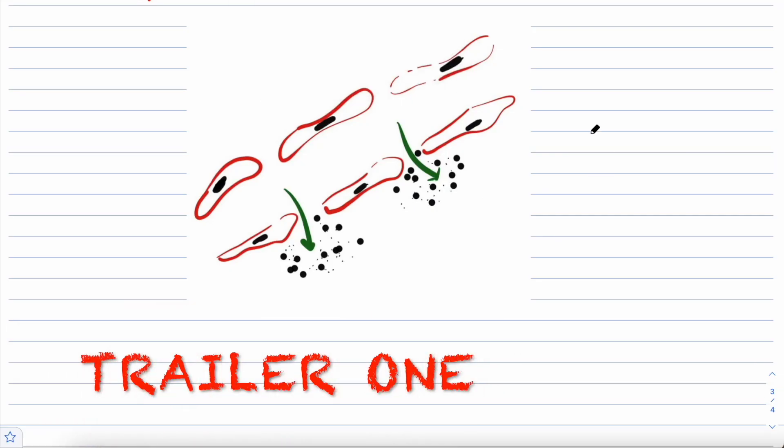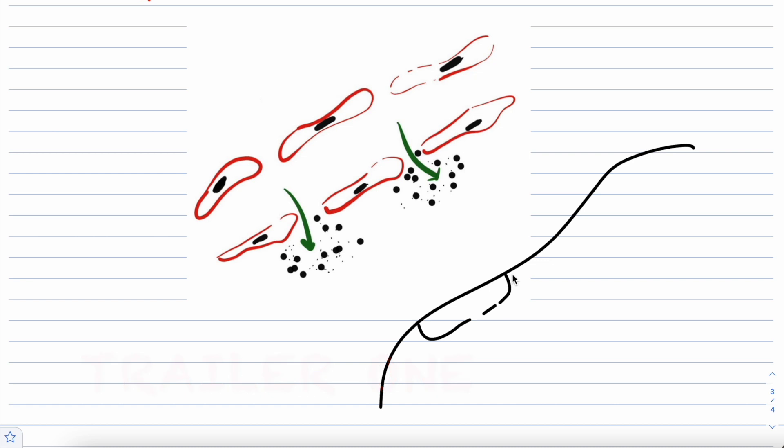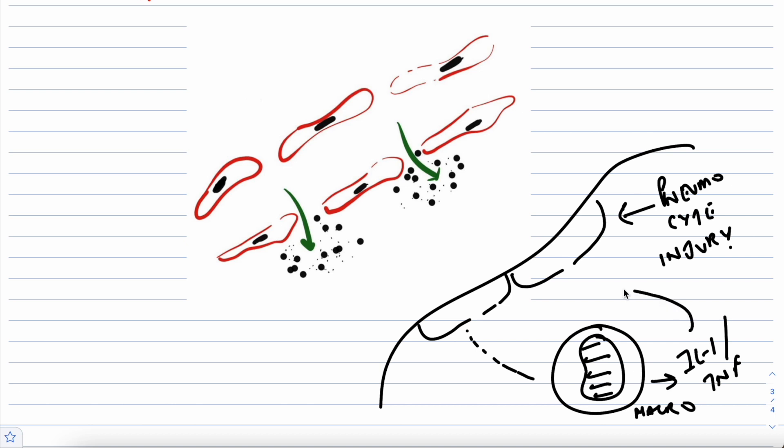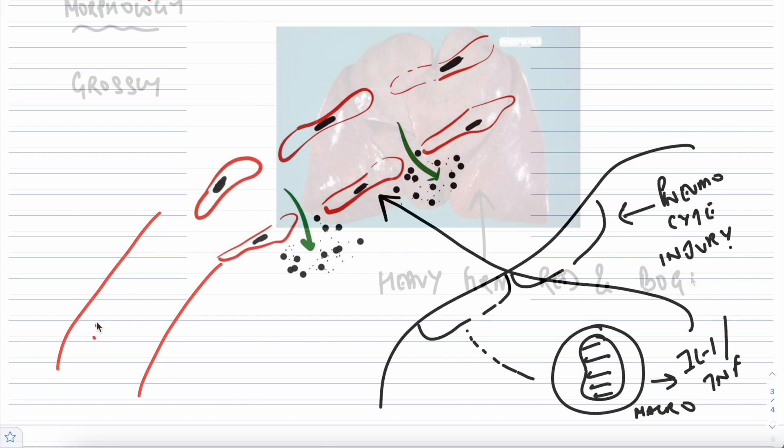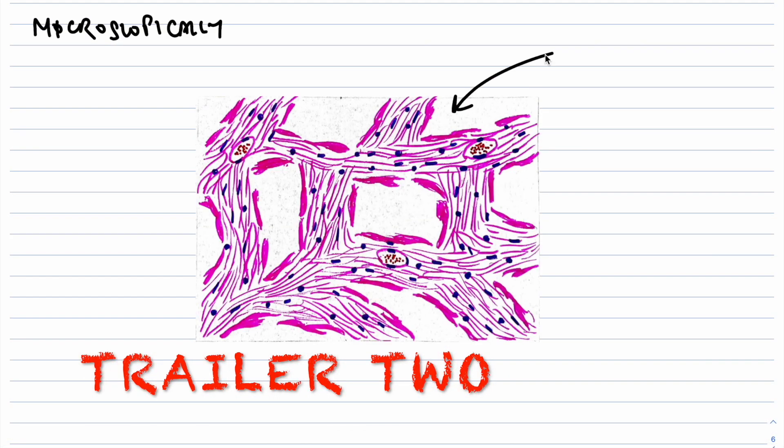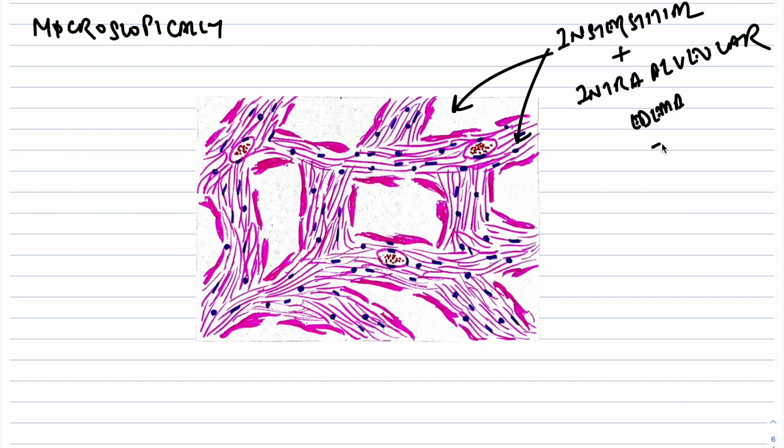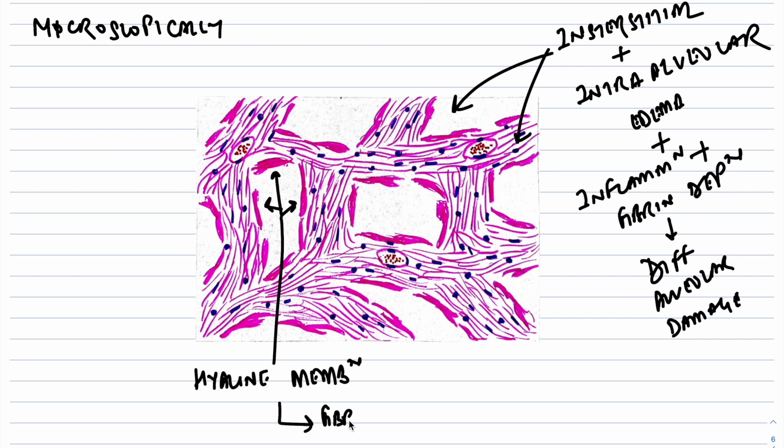Endothelial activation occurs secondary to pneumocyte injury, sensed by the resident alveolar macrophage which secretes mediators such as tumor necrosis factor and interleukin-1. Alternatively, the endothelium might also be activated. Microscopically, there is interstitial and intra-alveolar edema, inflammation, fibrin deposition, ultimately leading to diffuse alveolar damage. The alveolar walls become lined by waxy hyaline membranes composed of fibrin-rich edema fluid mixed with remnants of necrotic epithelial cells.